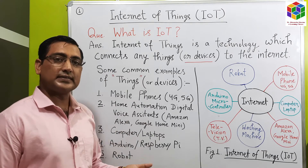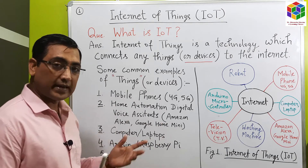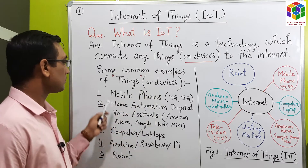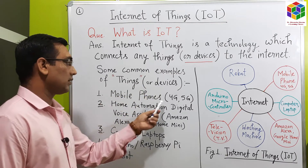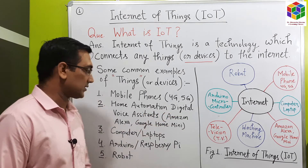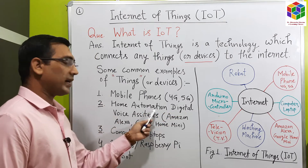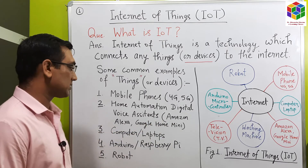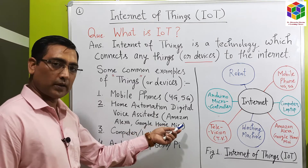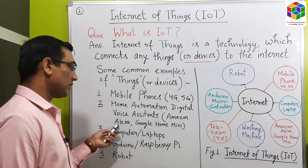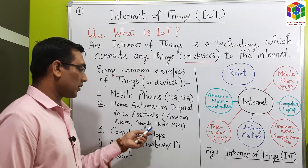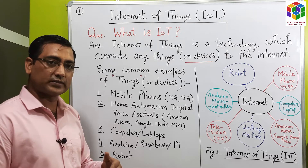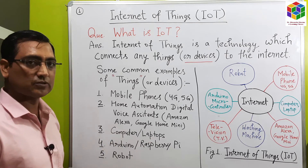Now, what are Things? Things means devices. Some common examples of things, that is devices, are: number one, mobile phone — that is, 4G and 5G wireless communication. Number two, home automation digital voice assistants. There are very popular home automation digital voice assistants: number one, Amazon Alexa; number two, Google Home Mini. If we speak something, they connect our voice to the internet and give us the result at our computer, mobile, or TV.